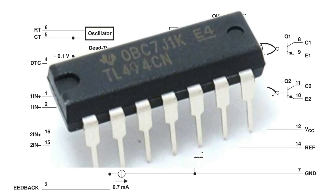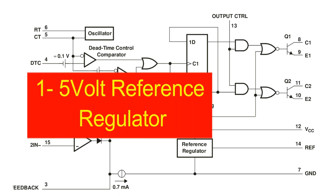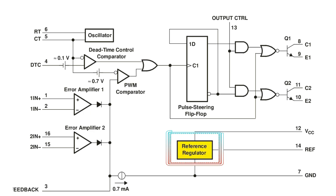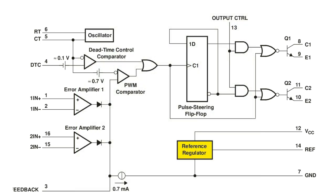The TL494 IC has eight functional blocks. The first is the 5V reference regulator. The 5V internal reference regulator output is the ref pin which is pin 14 of the IC. The reference regulator provides a stable supply for internal circuitry like the pulse steering flip-flop, oscillator, dead time control comparator, and PWM comparator. The regulator is also used to drive the error amplifiers which are responsible for controlling the output.